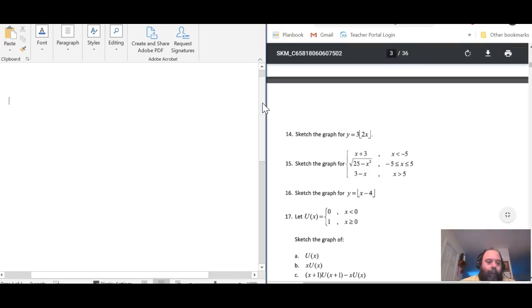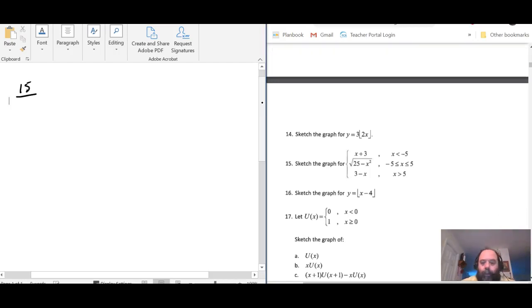All right, so let's look at problem 15. We've got x plus 3 when x is less than negative 5. We have this 25 minus x squared for negative 5 less than or equal to x less than or equal to 5, and 3 minus x when x is greater than 5.